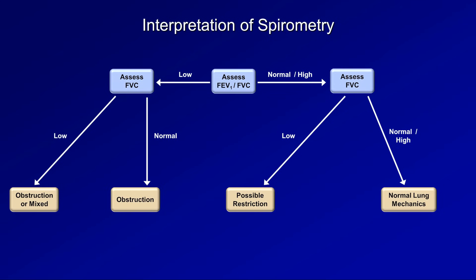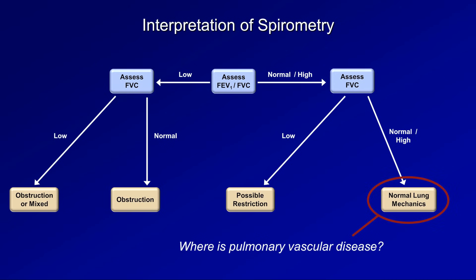Some viewers may wonder where pulmonary vascular disease fits in this algorithm. Pure pulmonary vascular disease is actually characterized by normal lung mechanics — it cannot be distinguished from completely normal lungs using spirometry alone. The chart is also incomplete in other ways: the leftmost outcome is obstruction or a mixed disorder, then there is a 'possible restriction,' and spirometry cannot distinguish pulmonary vascular disease from normal. The next two videos will add information from lung volumes and DLCO to remove the majority of this uncertainty.